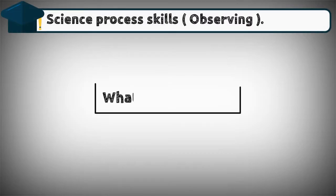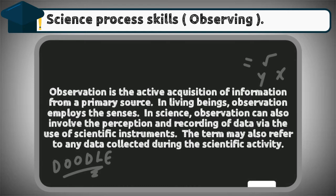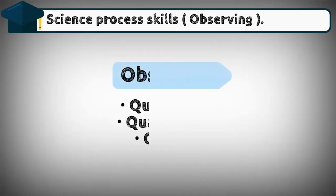Science process skills: observing. What is observation? Observation is the active acquisition of information from a primary source. Living beings use their senses for observation. In science, observation can also involve the perception and recording of data via the use of scientific instruments. The term may also refer to any data collected during a scientific activity.